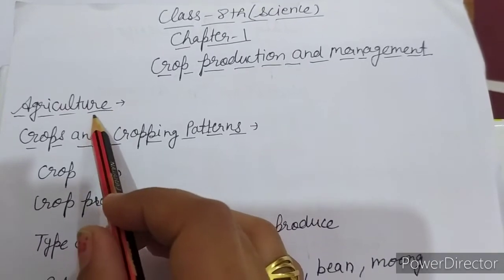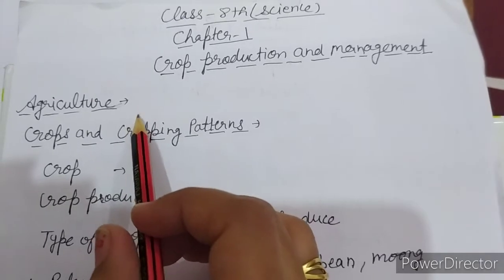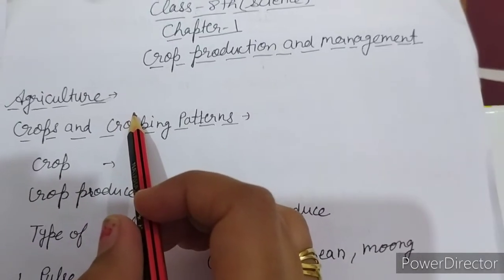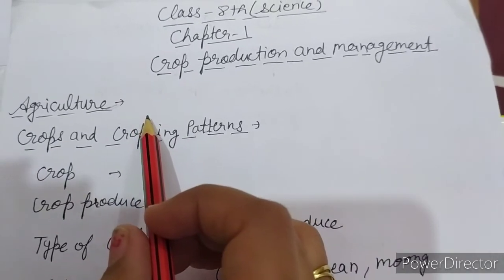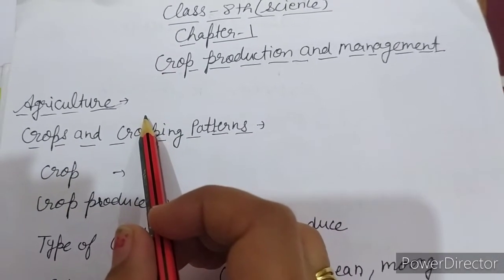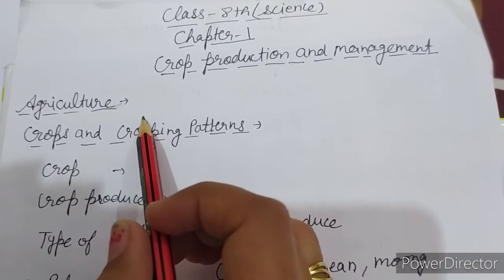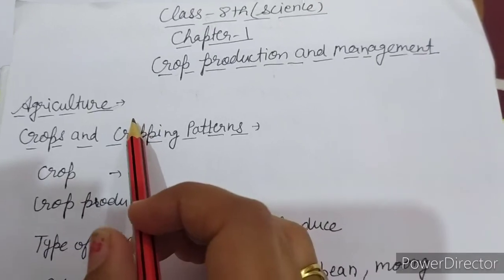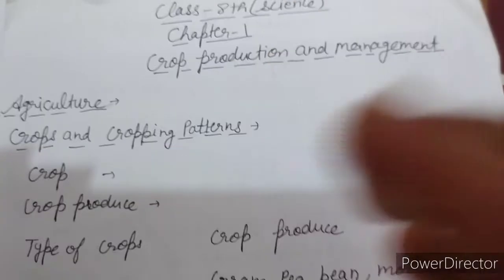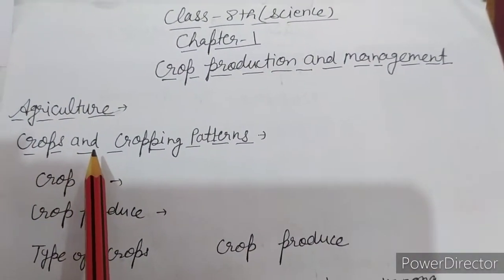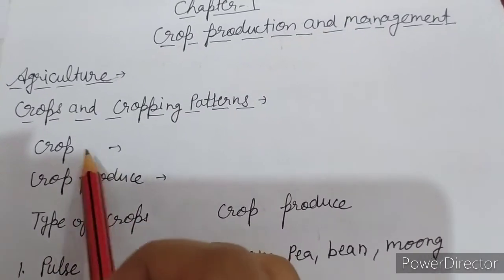Let's move on to agriculture. What is agriculture? Agriculture is the branch of science that deals with the production of crops — means science की ऐसी branch जो crops की production के साथ deal करती है, या फिर animals के साथ — means animal को हम किस तरह से rear कर सकते हैं, उससे deal करती है। उस branch को हम agriculture बोलते हैं — means जो plant और animals से relate है।